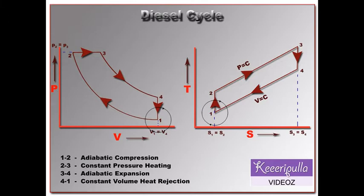At point two, a hot body is brought in contact with the cylinder end, and heat is supplied to the air at constant pressure. At point three, the hot body is removed and the supply of heat is stopped.